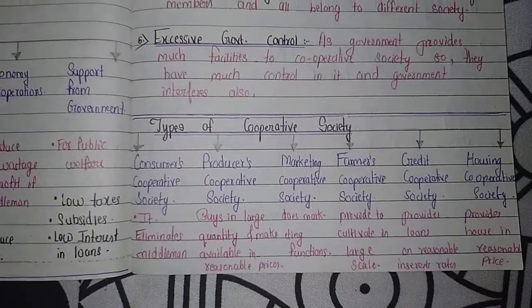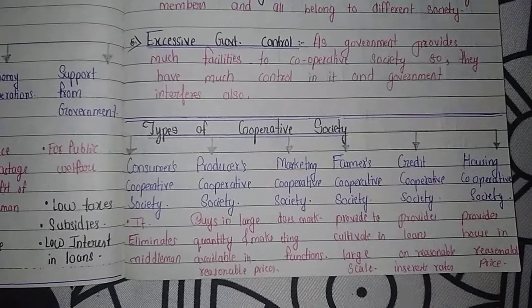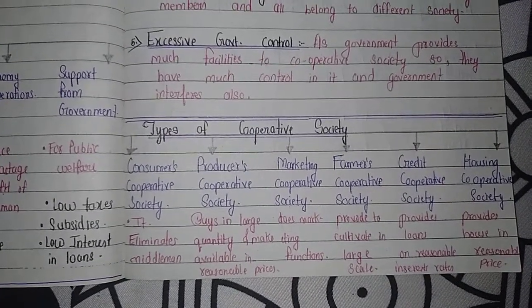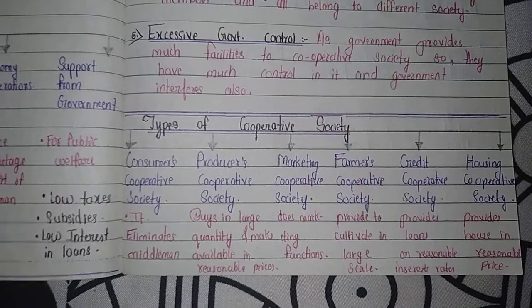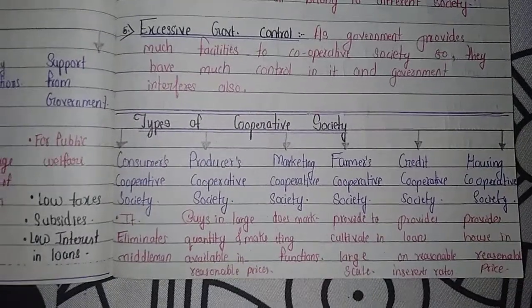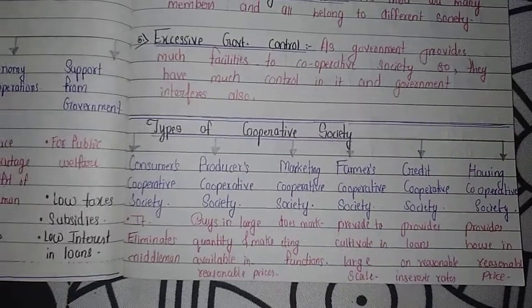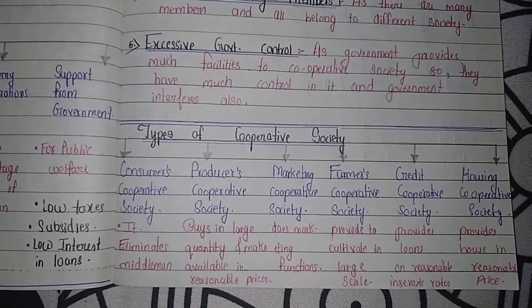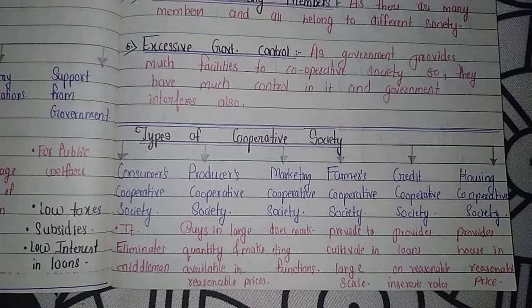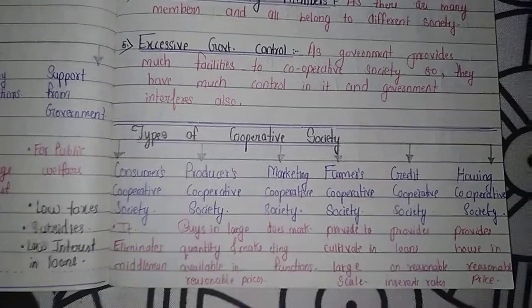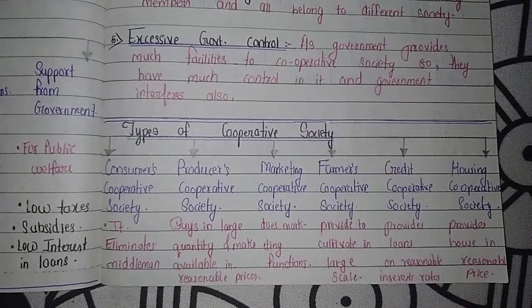In producers cooperative society, small producers cannot individually get access to large buyers. So they form a cooperative society, make large bulk orders together, and as a result they get reasonable prices for their goods.